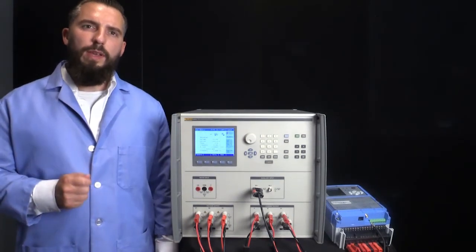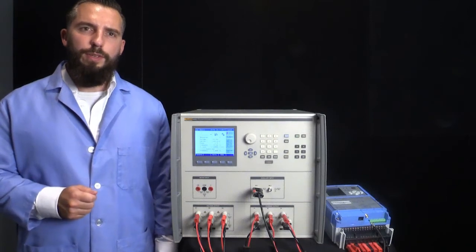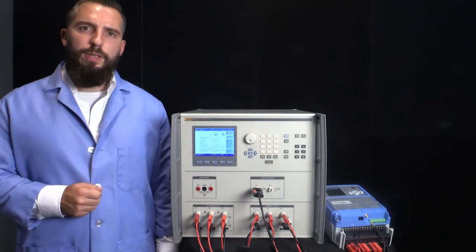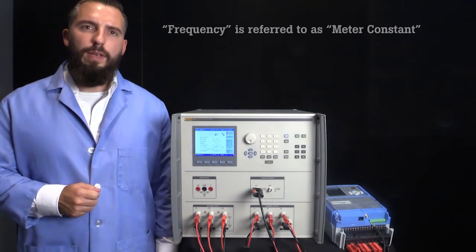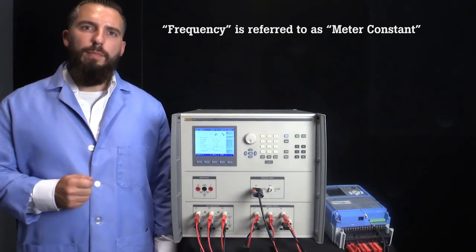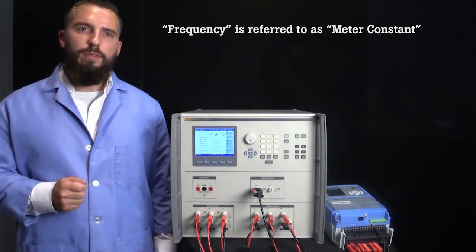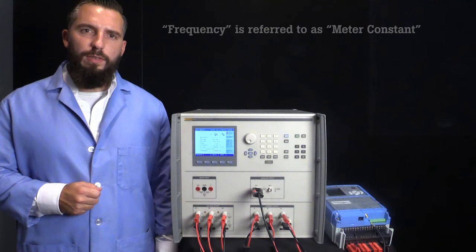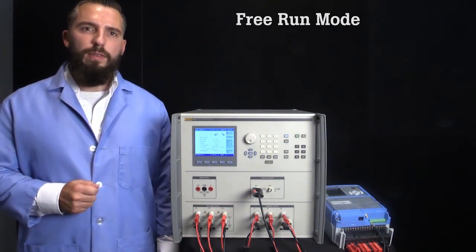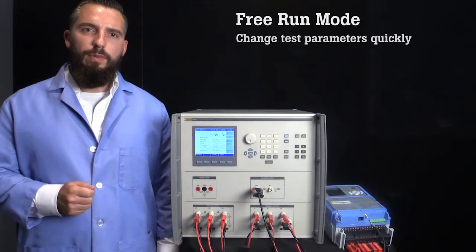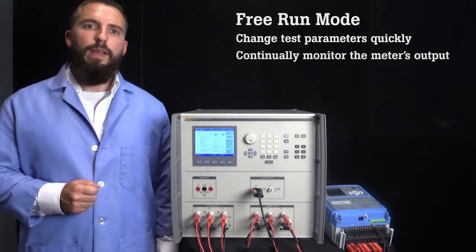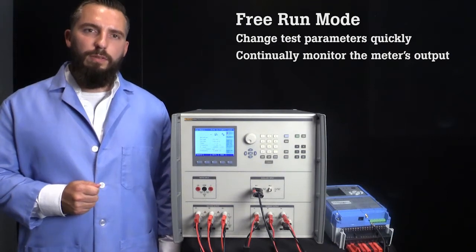One of the biggest pain points in energy meter calibration is determining what the correct frequency of the meter output is based on the energy it is measuring. For reference, the frequency is also commonly referred to as the meter constant, and matching the meter constant to the calibration system can be confusing. The 6003A has a mode called Free Run that simplifies this process.